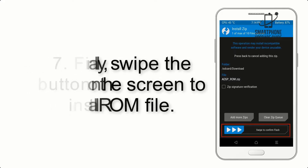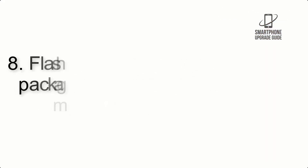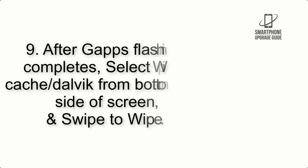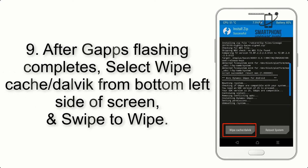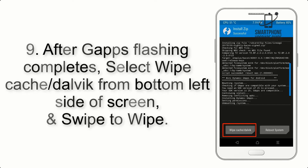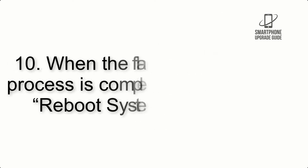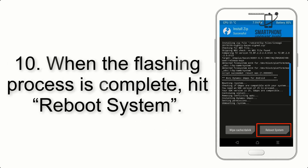Step 7: Swipe the button on the screen to install the ROM file. Step 8: Flash the GApps zip package in the same manner. Step 9: After GApps flashing completes, select Wipe Cache and Dalvik from the bottom left side of the screen and swipe to wipe.